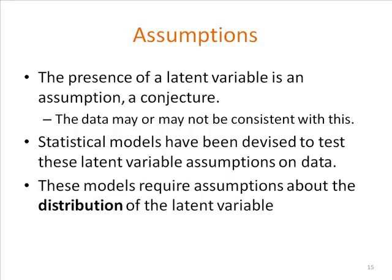The whole idea that there's a latent variable out there we haven't measured that's causing things we have measured is an assumption — a conjecture. The data we collect may or may not be consistent with this. But people have devised statistical models that try to test how plausible it is that a particular latent variable model fits a certain set of data. A key assumption these latent variable models need to make — because we don't observe these variables, so we must make assumptions to make them testable — is that we have to make assumptions about the distribution of the latent variable, what type of variable it is. That's the key idea of latent structure analysis: we're trying to work out what is the structural distribution or form of the latent variable we're interested in.